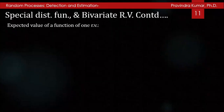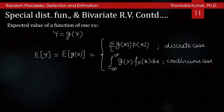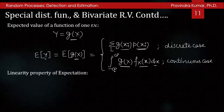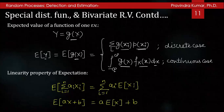The expected value of a function of one random variable: if y = g(x), then E[Y] = E[g(X)]. In the discrete case, E[g(X)] = Σᵢ g(xᵢ) · p(xᵢ). In the continuous case, E[g(X)] = ∫_{−∞}^{∞} g(x) · f_X(x) dx. The expectation operation is linear: E[Σᵢ aᵢXᵢ] = Σᵢ aᵢ E[Xᵢ], and E[aX + b] = a·E[X] + b.